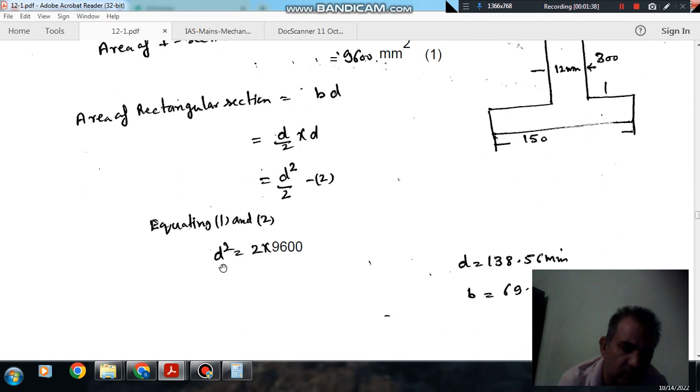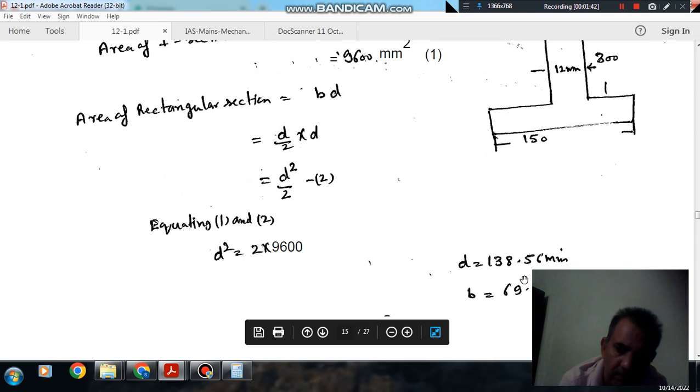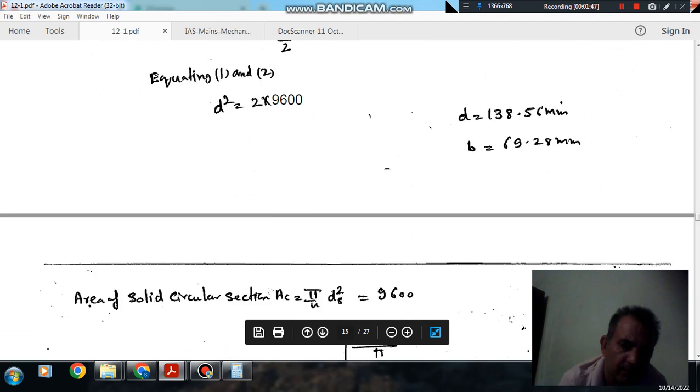As both areas are equal, so d square will be here 2 into 9600, or d will be 138.56, or b will be 69.28.